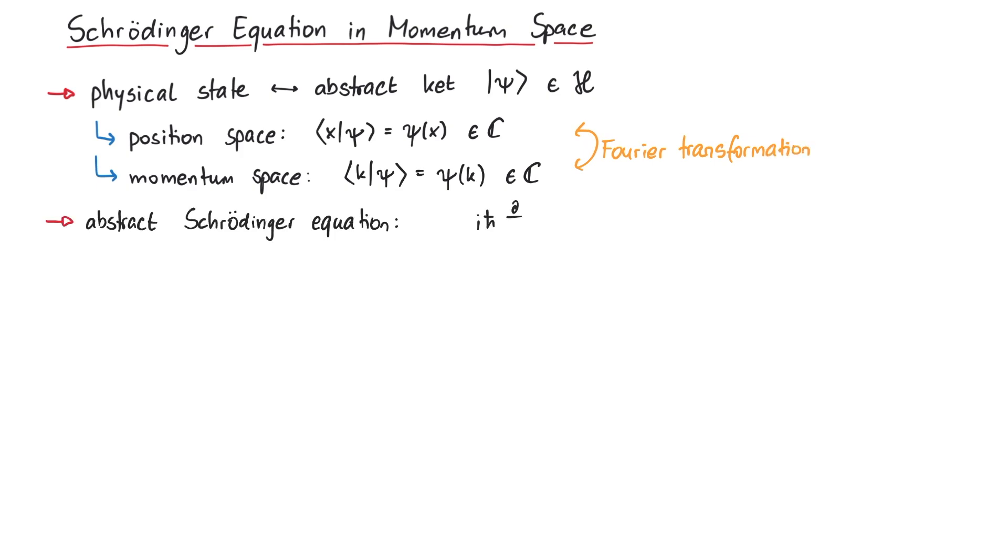In the same way, we will now take the abstract representation-free Schrödinger equation and project it onto momentum basis states. The left-hand side can be simplified to involve the wave function psi tilde, but on the right-hand side, we have to deal with the Hamiltonian operator. Since the Hamiltonian consists of kinetic energy and potential energy, let us investigate each part separately.